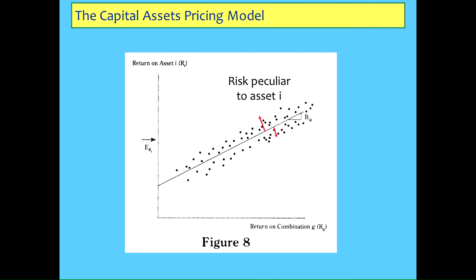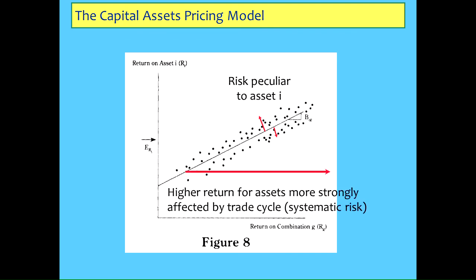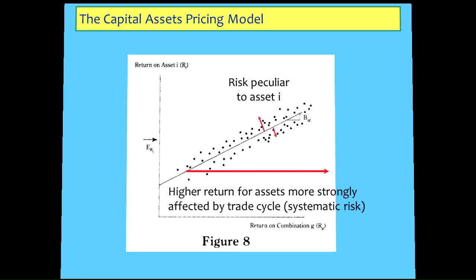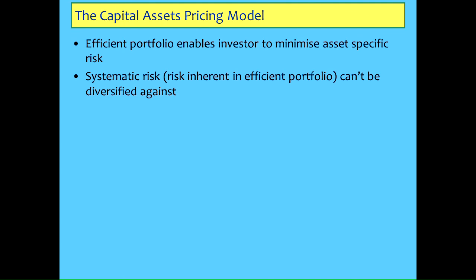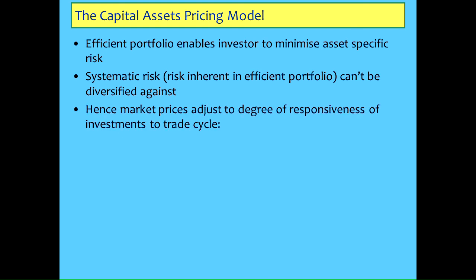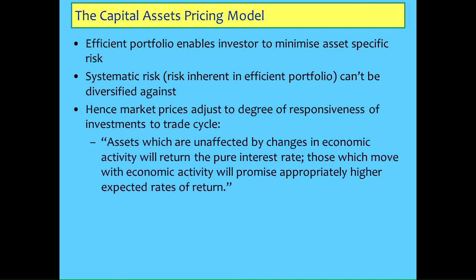There's the market return, there's the return on some combination. There's the riskless return - that's your P - and the further out you go, the higher return you get, and the slope of the line is beta. So you get a higher return if you invest in assets that are more correlated to the trade cycle - they go up and down more. You get a classic idea of a trade-off between risk and return. By choosing an efficient portfolio you minimize the risk from a specific asset, but you don't isolate yourself from the systematic risk overall.